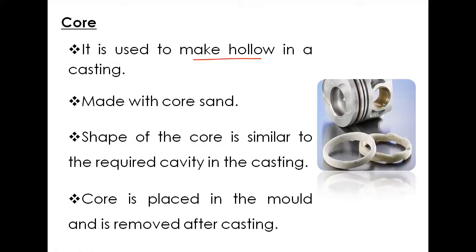Core is used to make a hollow portion in a casting. When we need a hollow shape for a particular component or object, that is when we go for a core. Core is always made with a core center — the shape of the core is similar to the required cavity. Whatever shape has to be produced in the particular component, that particular shape and size is prepared initially, then kept inside the mold.